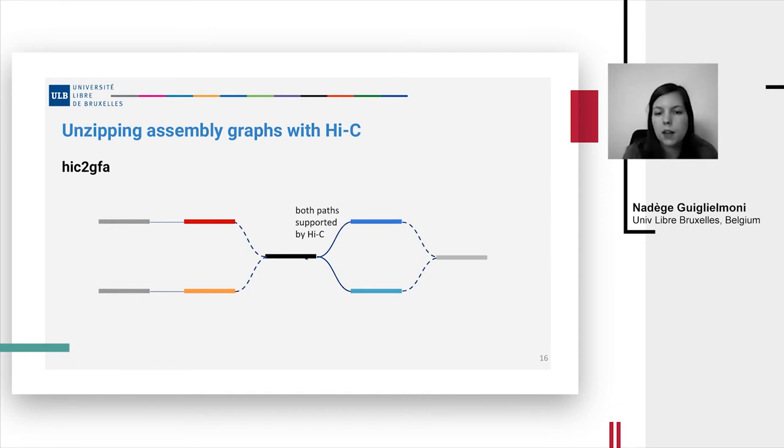Then the black sequence has strong interactions with dark blue and with light blue. So the black sequence is duplicated and then the two black sequences have potential links with both red and with orange, which we don't know yet whether red should go with dark blue or light blue and orange with dark blue or light blue.